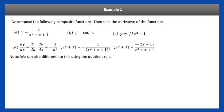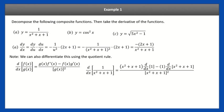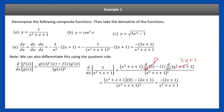We can also differentiate this using the quotient rule — we don't have to use the chain rule here. Using the quotient rule: the derivative of 1 is zero, so that term goes away, and the derivative of the bottom is 2x + 1. Over the denominator squared. That gives you the same answer. So we got the same answer using the chain rule and using the quotient rule.